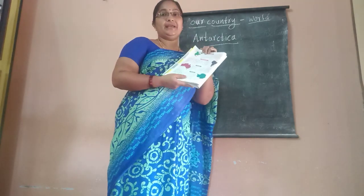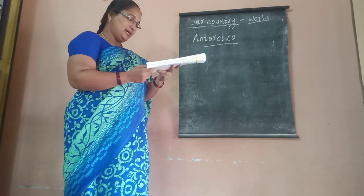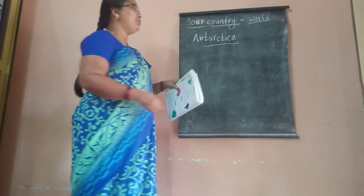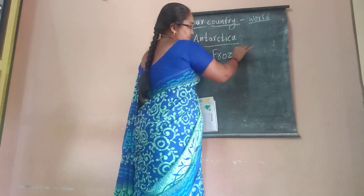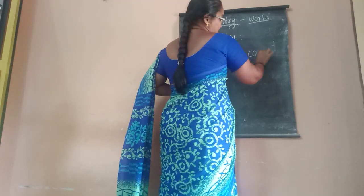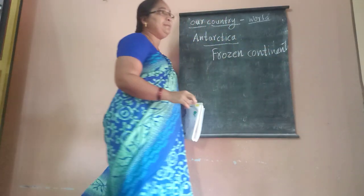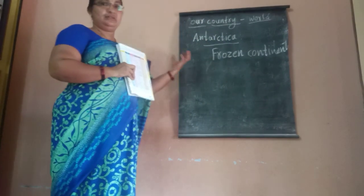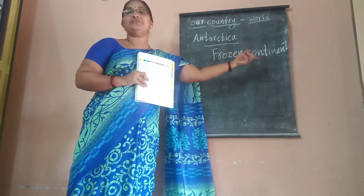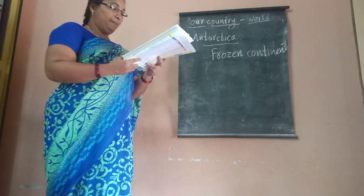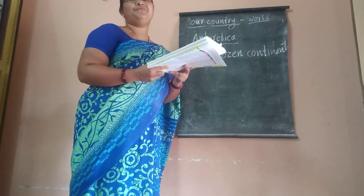The ground at the south pole is the icy continent. Antarctica is the icy continent. It is also called the frozen continent, because 98% of the land is permanently frozen.